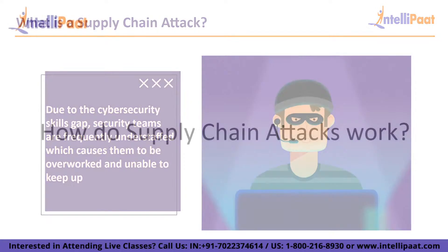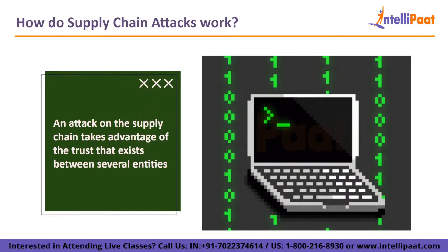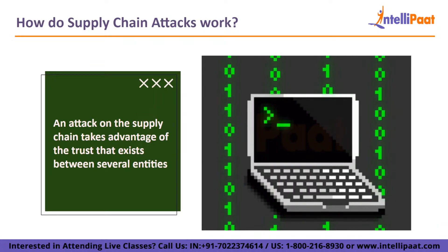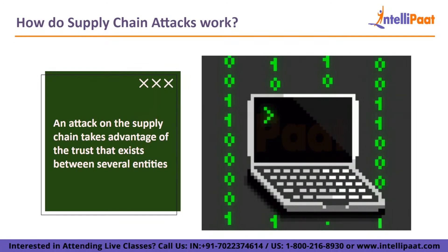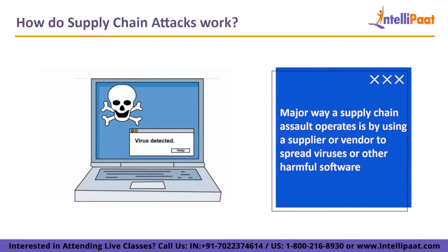Let's move on to our next topic: How do Supply Chain Attacks Work? An attack on the supply chain takes advantage of the trust that exists between several entities. As organizations install and use a company's software within their networks or collaborate with them as a vendor, all organizations have an implicit amount of trust in other businesses. The major way a supply chain assault operates is by using a supplier or vendor to spread viruses or other harmful software. For instance, a keylogger installed on a USB drive can infiltrate a major retail organization, where it records keystrokes to extract passwords for particular accounts. Cyber criminals then have access to private company data, client records, and even payment information.